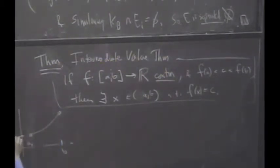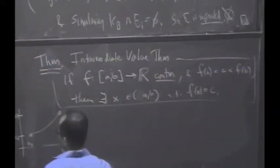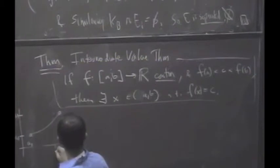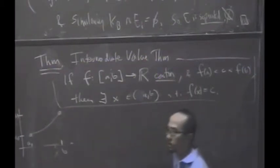The claim is between F(A) and F(B), you give me a point C, and I claim there is a point X that achieves the value C.